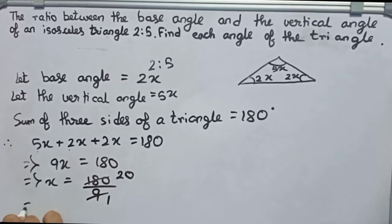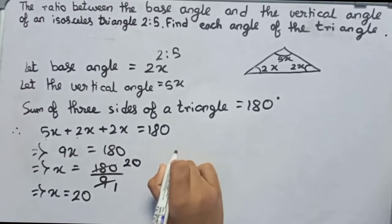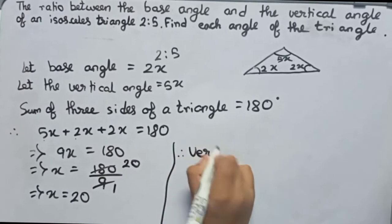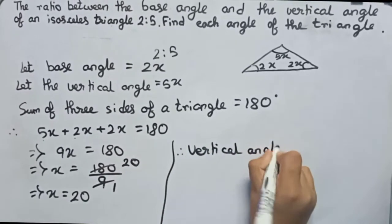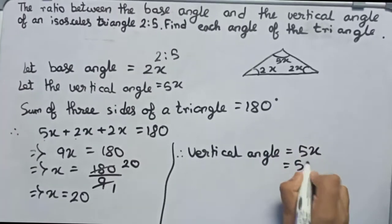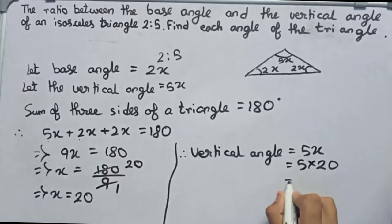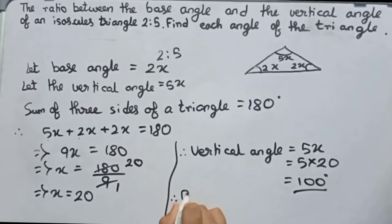So therefore you write the vertical angle that you have taken as 5x, so it will become 5 into 20, that will be 100 degrees. So this is our vertical angle. So therefore base angle: